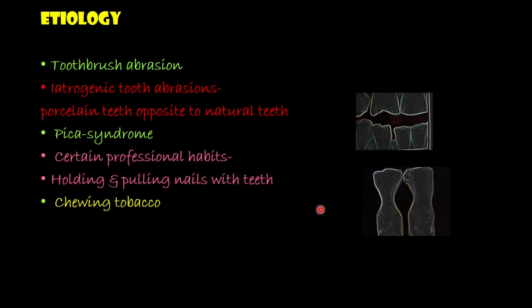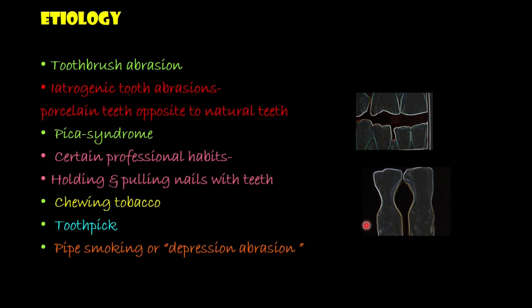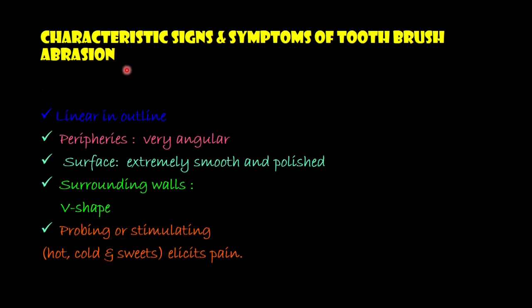Chewing tobacco leads to generalized abrasion of the occlusal surface. Toothpick abrasion — as seen in the diagram — results in abrasion in the interdental area due to injudicious use of the toothpick. Pipe smoking or depression abrasion shows abrasion over the incisal or occlusal surface where the pipe is held, leading to both intrusion and depression over that surface. The characteristic signs and symptoms of toothbrush abrasion: lesions appear linear in outline, the periphery of lesions is very angular, the surface is extremely smooth and polished, the surrounding walls are V-shaped, and probing or stimulation with hot, cold, or sweets elicits pain.